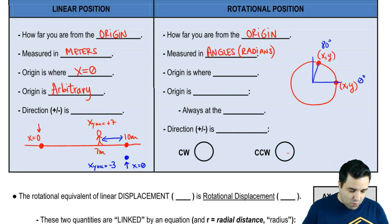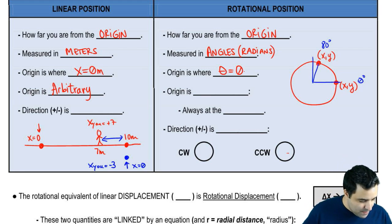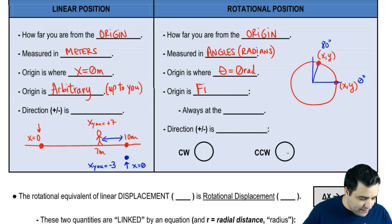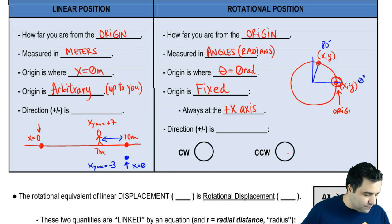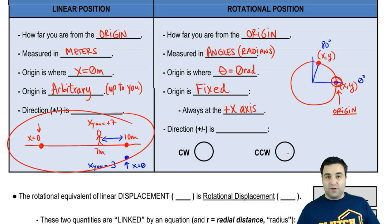In rotation, it's a little bit different. In rotation, origin is still where position, in this case theta equals zero, zero degrees or zero radians. Let me put a little meters here. Zero degrees or zero radians. The difference is that, whereas here it's arbitrary, it's up to you, unless the problem tells you, in rotational position, the origin is always fixed. It's fixed at the positive x-axis. Zero is always here. Remember the unit circle. This is always the origin. That's non-negotiable. Whereas here, you could put it whatever you want if you're given that kind of liberty in the problem.